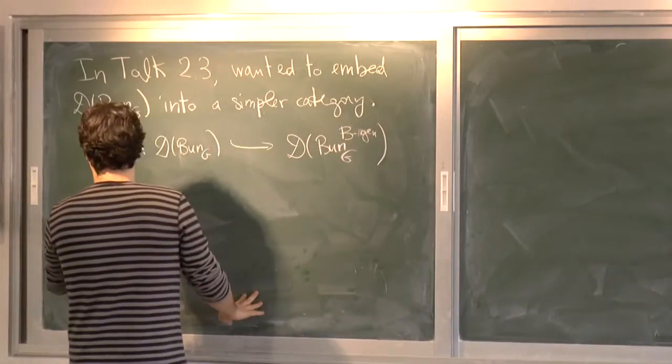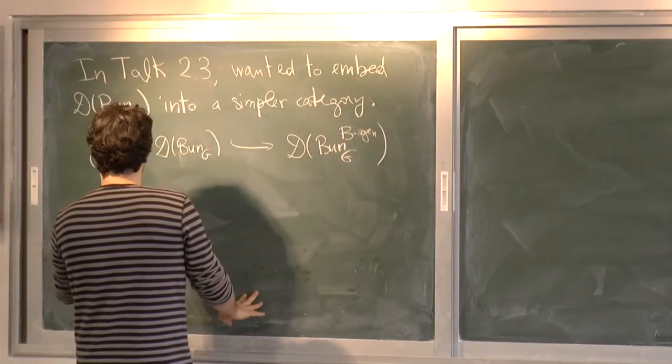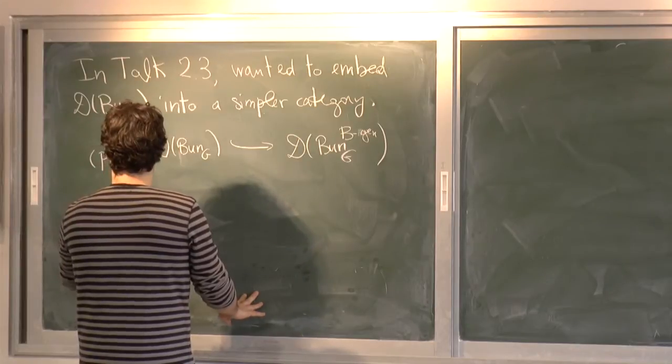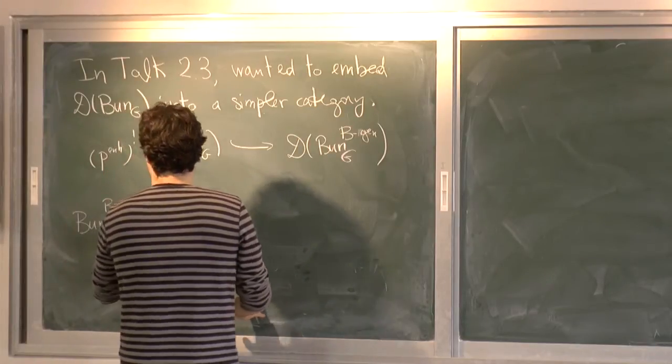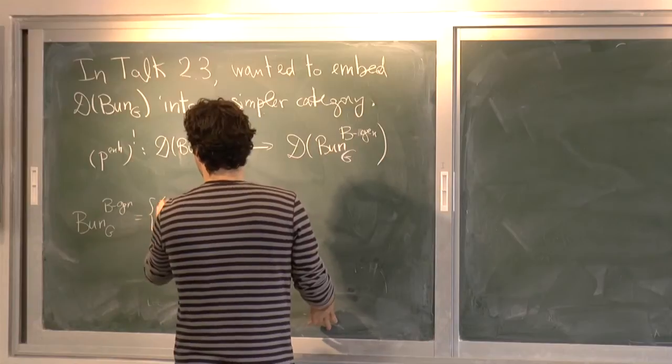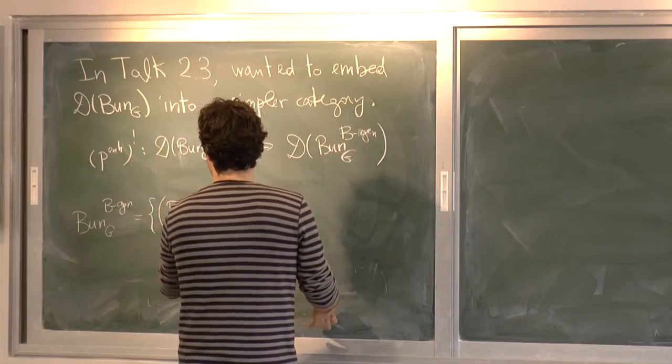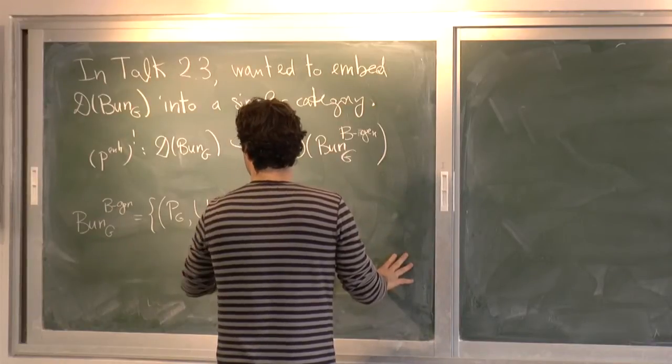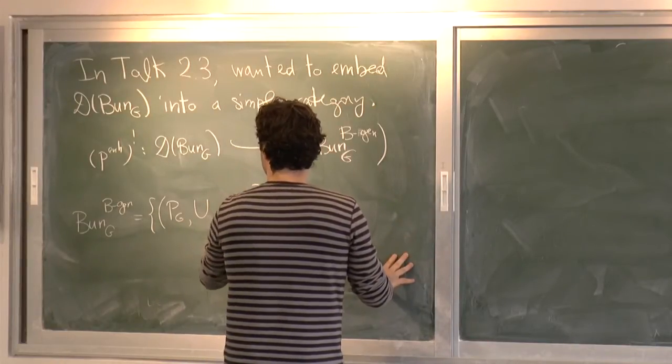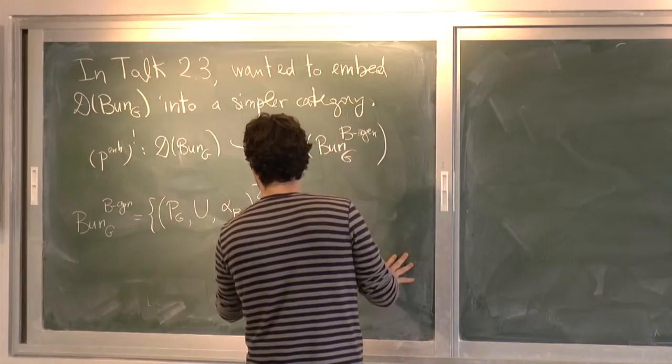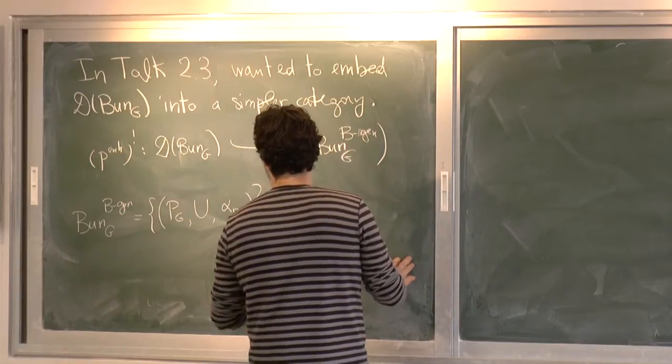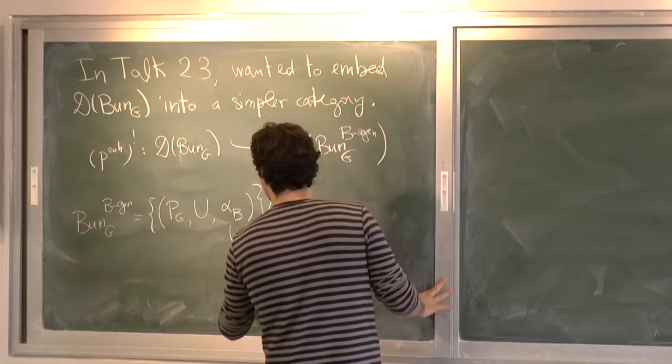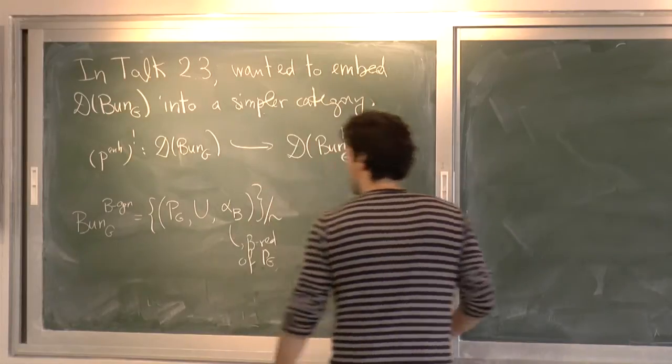Let me just remind quickly what Bun_G with B-generic reduction was. It was the pre-stack parameterizing a G-bundle, a domain, and a reduction, a B-reduction of P_G on U.